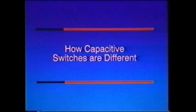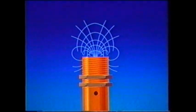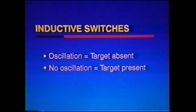Up until now, we've been discussing inductive switches. Now let's look at capacitive switches and how they're different. An inductive switch radiates a low-energy electromagnetic field, and when a conductive target enters this field, it draws energy from the field and oscillation stops. For inductive switches, oscillation means the target is absent, and the lack of oscillation means the target is present. Inductive proximity switches sense targets which are electrical conductors, and the inductive switch oscillates because of an LC circuit.